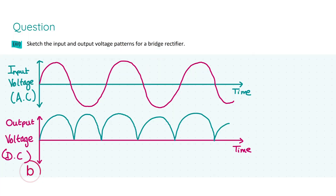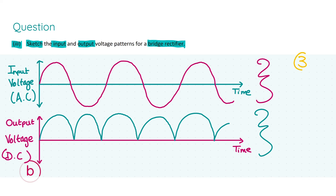In part three we're asked to sketch the input and output voltage patterns for a bridge rectifier. We plot voltage versus time for both diagrams, which earns three marks for correct axis labelling. The input voltage is an AC source — sinusoidal and bidirectional, with both positive and negative voltage values — and stating this earns another two marks.